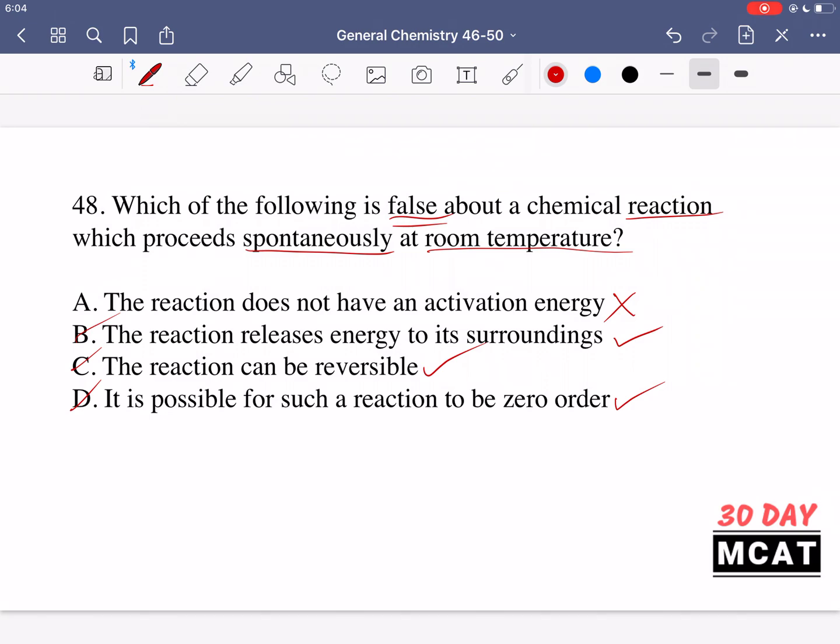We don't know what the order is. We don't know what specific reaction we're talking about. It being spontaneous doesn't really give us anything that we can directly solve for the rate. We would have to do this experimentally but it can possibly be zero order. Option A though is something which is a false statement so it's the correct answer.